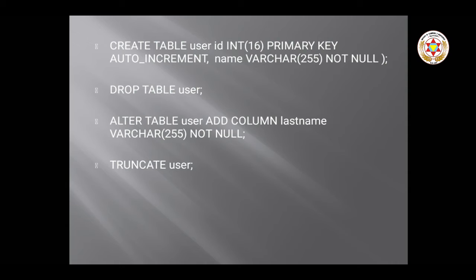For ALTER, we are making changes to the structure. For example, the 'user' table initially has only two columns — id and name. By using ALTER TABLE, we add a new column called 'last_name'. The command is: ALTER TABLE user ADD COLUMN last_name VARCHAR(255) NOT NULL. After this, the table will have three columns: id, name, and last_name.